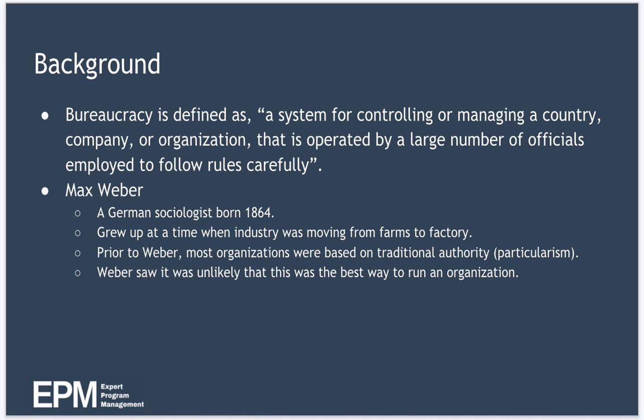Weber saw that organising large groups of people like this presented new challenges, especially when it came to authority. At this time, most organisations were running based on what's called traditional authority, where how well you did was based on who you knew and not what you knew. Today we call this favouritism, but Weber called it particularism, where a particular group of people had disproportionate sway over the organisation.